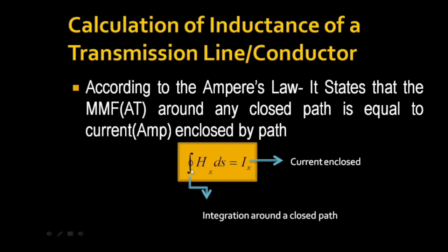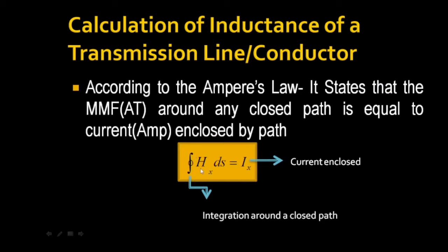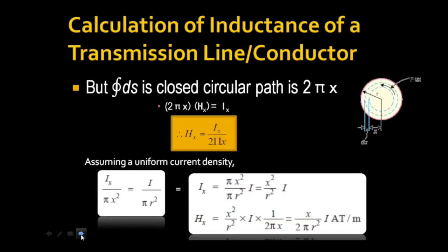This closed integral represents the integration around a closed path, where Ix represents the current enclosed. The closed circular path integral of ds equals 2πx. Substituting this into the expression, we get H_x · 2πx = Ix, and rearranging: H_x = Ix / (2πx).